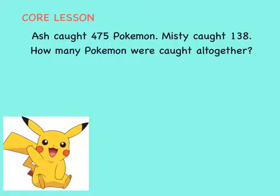Because this problem says all together, we know that we need to add the two numbers, 475 and 138. We are going to use the strategy called partial sums to look at one place at a time as we add. Let's start with the hundreds place.